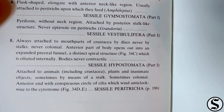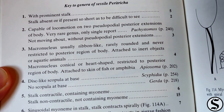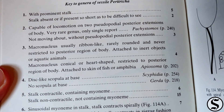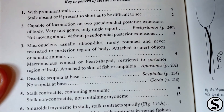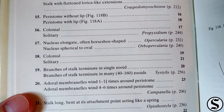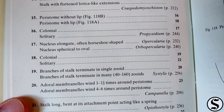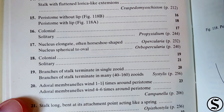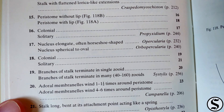This takes us through much of the same questions. Number five: attached to animals, plants, or inanimate objects with a stalk — takes us to the Cecil paratricks on page 196. With a prominent stalk — that's what we've got. Step number five: stalk contractile, containing myoneme — we do not. A modern key would call that a spasmoneme. So since we don't have a spasmoneme in the stalk, we go to step 15. Step 15 asks if we've got a peristome with or without a lip — does not have a lip, so that sends us to step 16. It is colonial, which sends us to step 17. The nucleus is elongate and often horseshoe shaped. So that gives us opercularia on page 232.